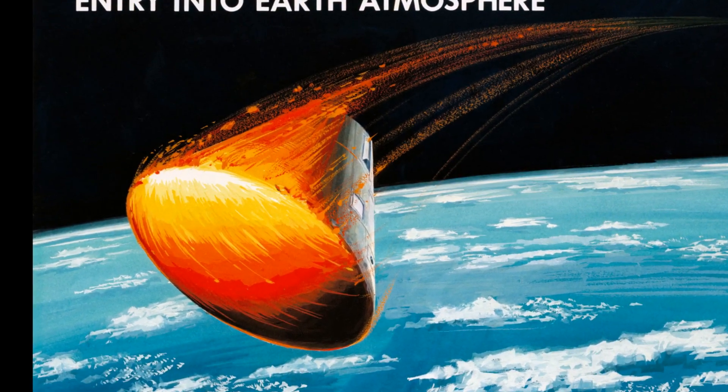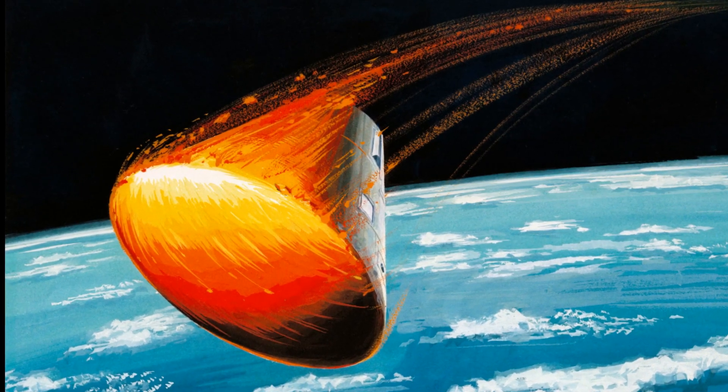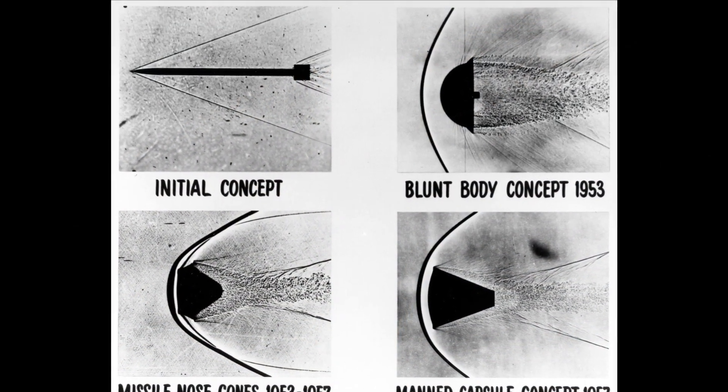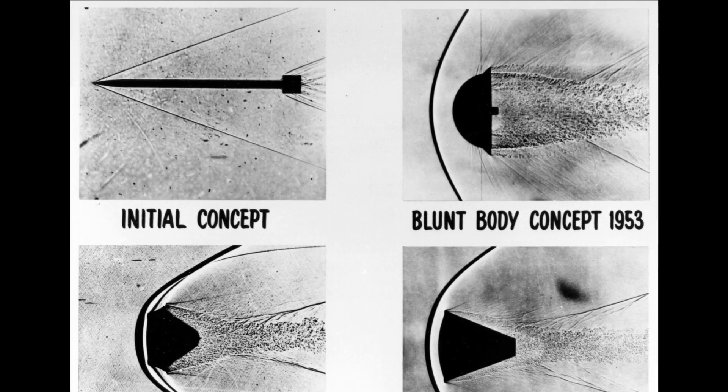If you're familiar with space technology, you've probably heard that re-entry vehicles should be shaped like a blunt body to keep the shock wave far away and reduce the heating of the vehicle.